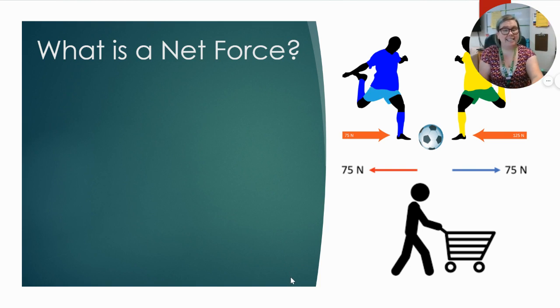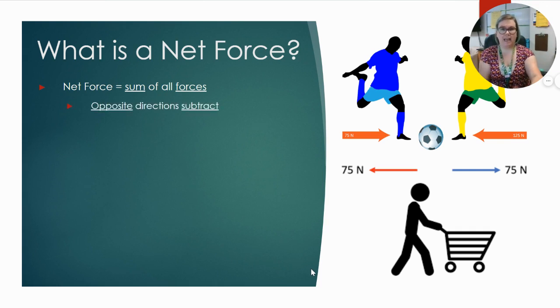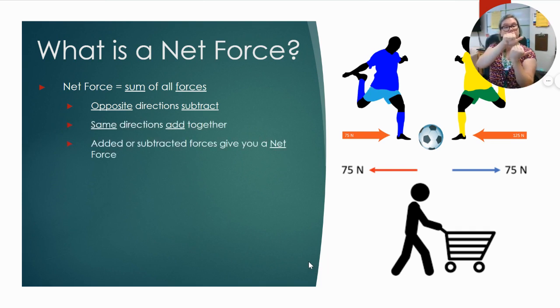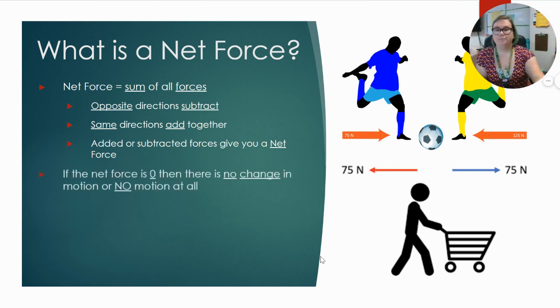So what is a net force? Well, net force is the sum of all forces acting on a particular object. So the opposite directions, you subtract those forces, right? Because they're opposite of each other. And if they're in the same direction, then we're going to add those together. Added or subtracted forces give you the net force, or the overall force. If the net force is zero, then there's no change in motion, or no motion at all.